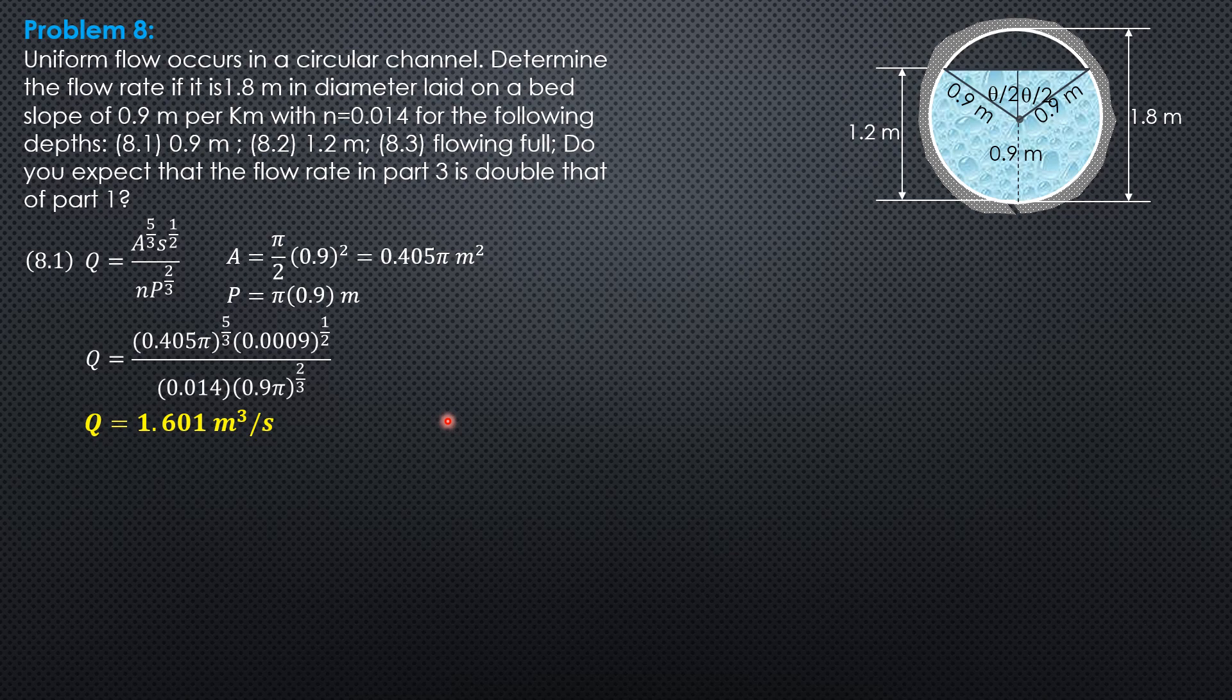So, 8.2, when the depth is 1.2, so this is 0.9 radius, so this is 1.2 minus 0.9, 0.3. Okay, let's call the half angle as theta over 2.